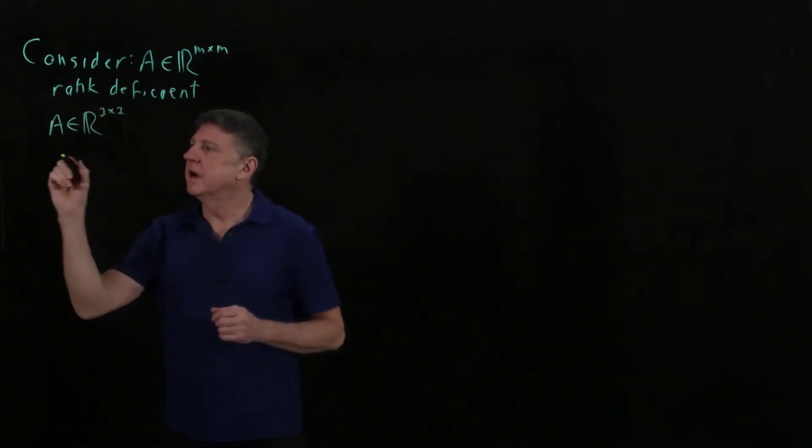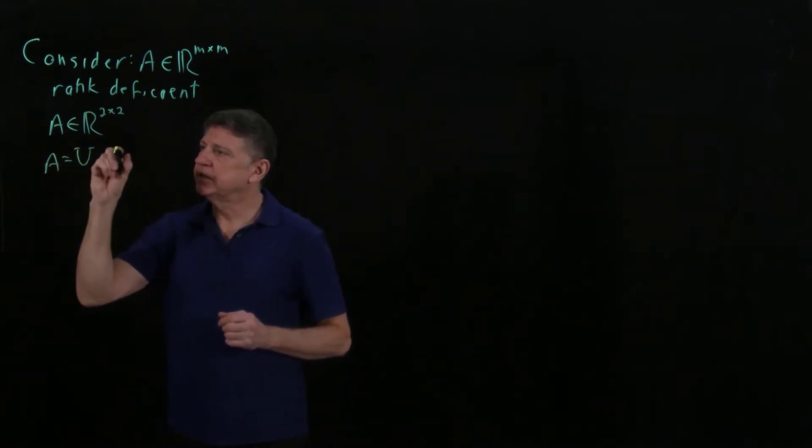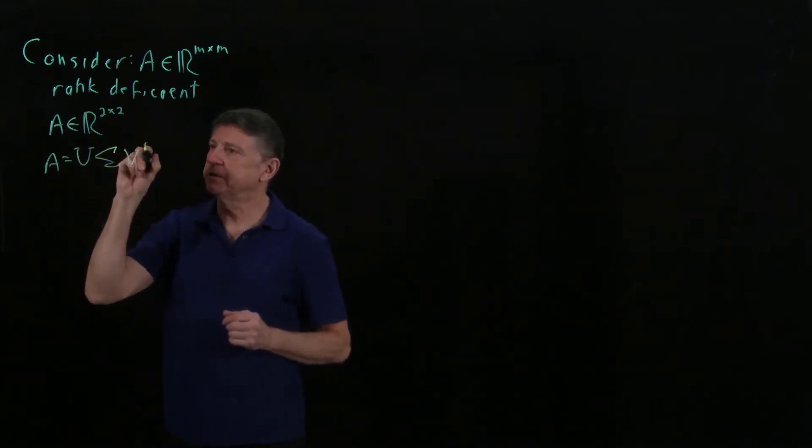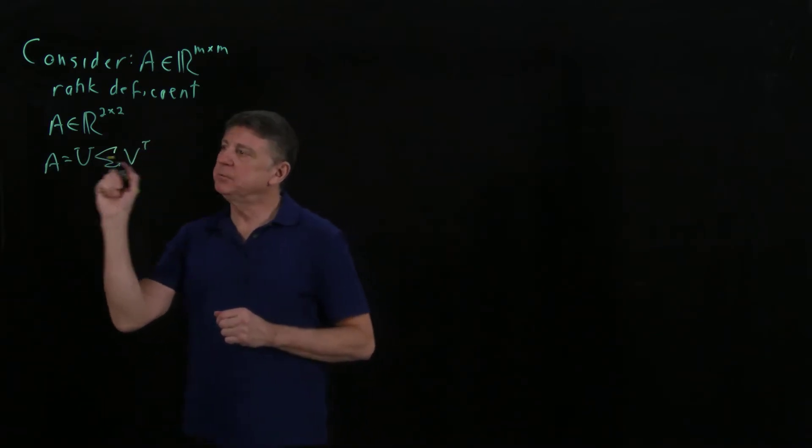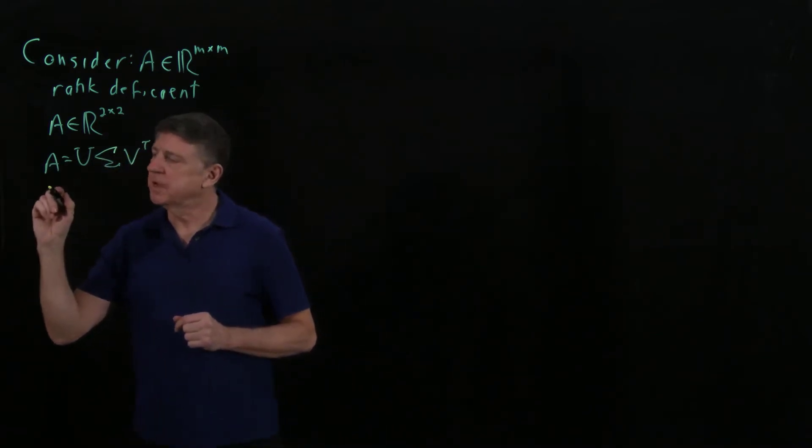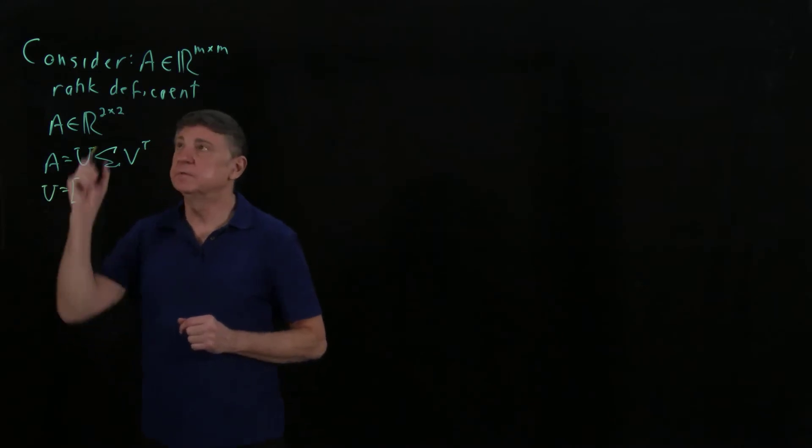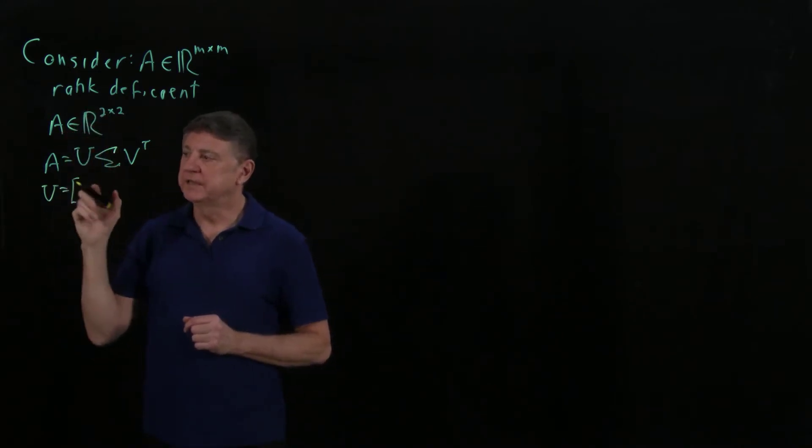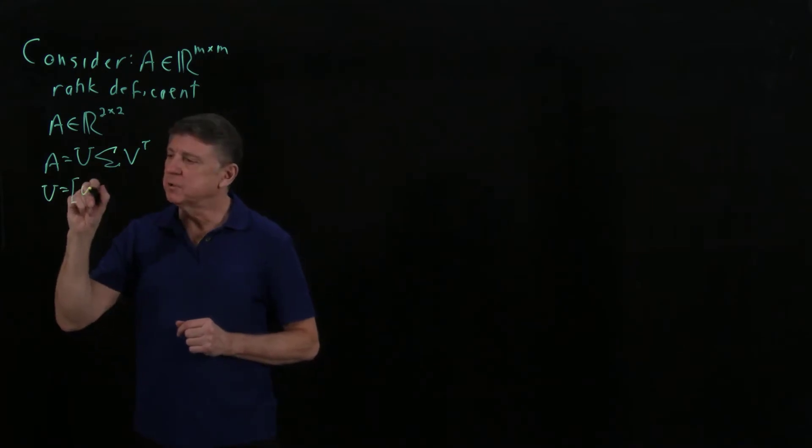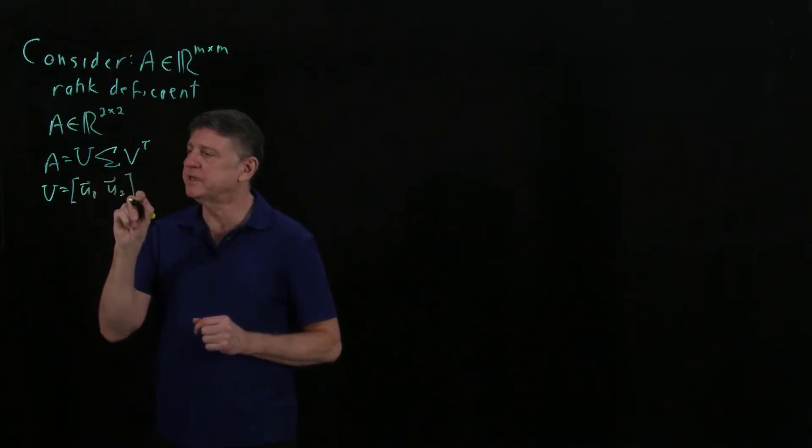Then I can write A as the singular value decomposition, and now let's observe what we can put in here. What we can say is that the matrix U will have, because this has two rows, U is a 2 by 2 matrix. So I can write that as U1, U2, block partitioning.